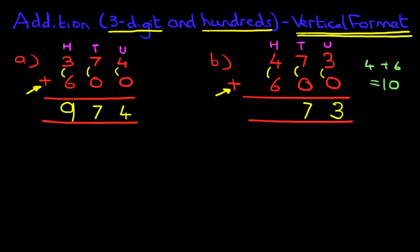4 plus 6 is 10. How do we write that? 1 here and 0 here. Now the 1 over here has become part of a new column, and that is TH for thousands. We don't have any thousands here or here. We've only got the 1 over here. So we write that down. 473 plus 600 is 1073.